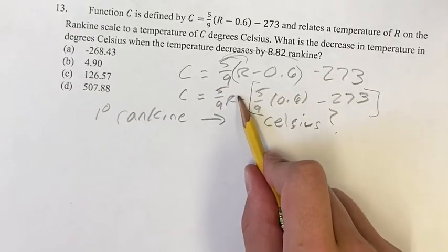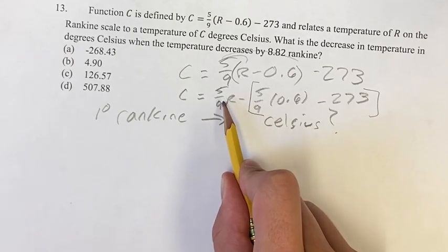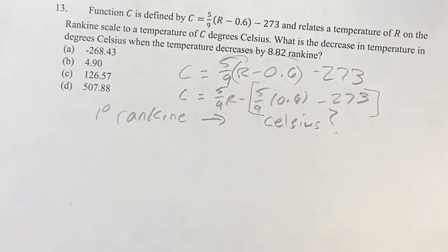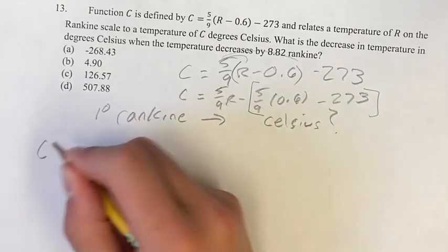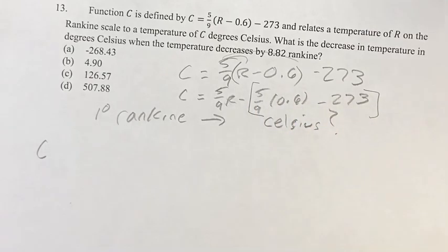So we're saying every 1 degree in Rankine that you change, that will change 5 ninths in Celsius. So if you have, let's say we're going from 0, ignoring this, because it'll be subtracted every time, so that's not going to actually change the amount that's being changed.